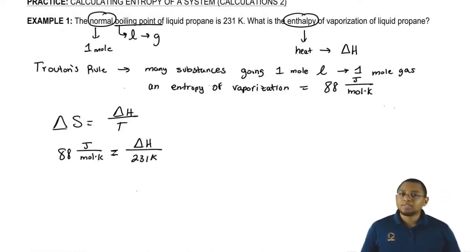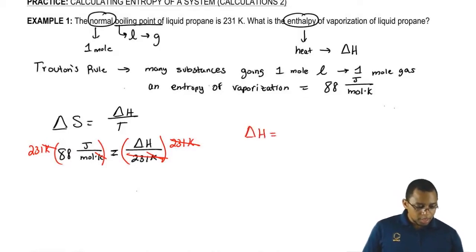All we have to do now is just isolate delta H. Multiply both sides by 231 Kelvin. Kelvins cancel out. At the end, your unit for delta H will be in joules over moles. That will be 20,328 joules over moles.